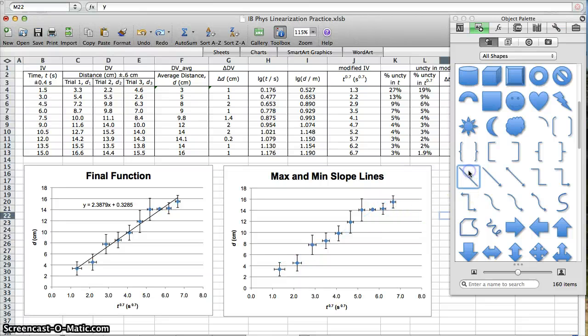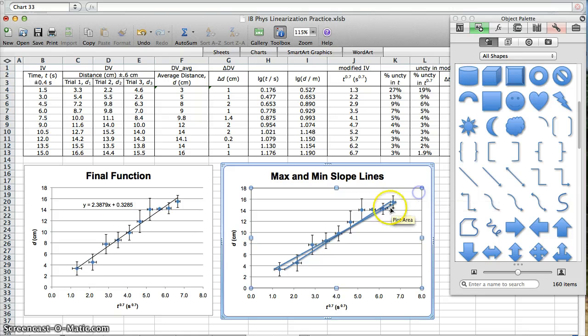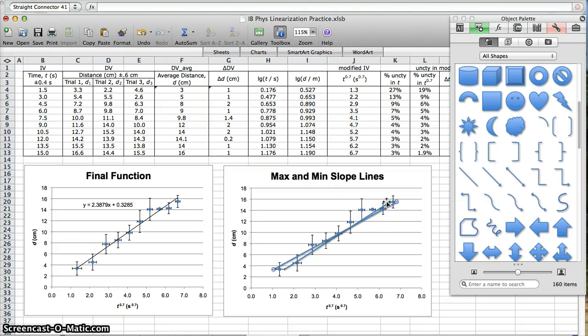You could also use horizontal error bars, and those would look like this. That would produce, hmm, would that be the maximum or the minimum? Let's compare. Okay, so yeah, the first one I did, this one, this one would be the max line, because it's steeper. Here, this would be the min line, because it's less steep.